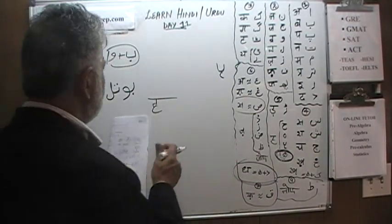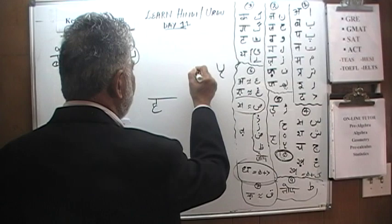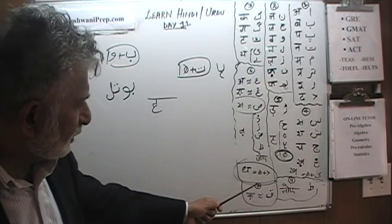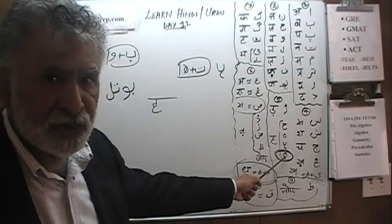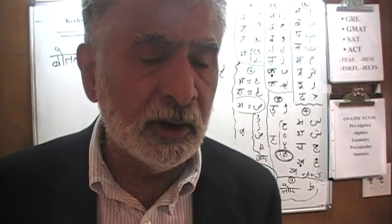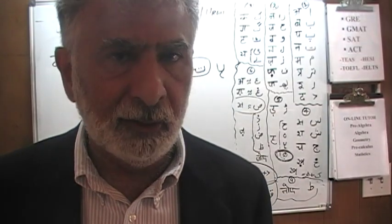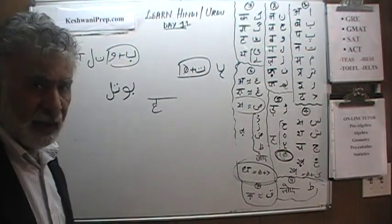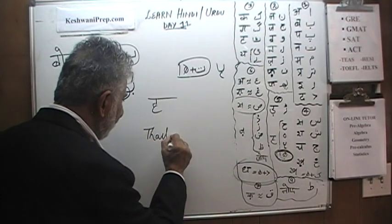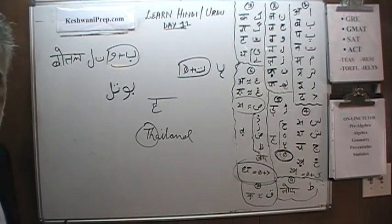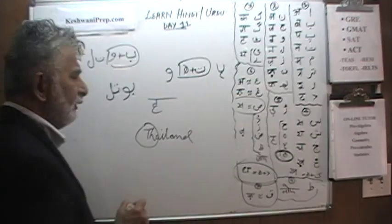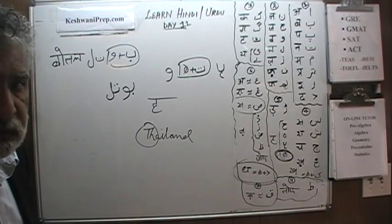Then we have Tha. Tha is going to be Te plus Do Chashmi Hai. That is the function Do Chashmi Hai performs in Urdu — it converts sounds like Tha into Tha, Bha into Bha, Kha into Kha. Urdu does not have unique letters for these sounds, so we make them this way, just like English uses T and H together to write 'Thailand.' Same thing here: Te and a H makes Tha. And then to that we add Vav — that's the Oki Matra. All of that is going to be Oki Matra — Chhoti Oki Matra.